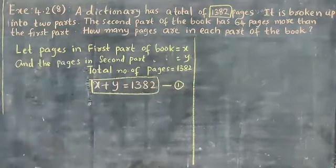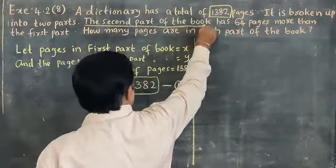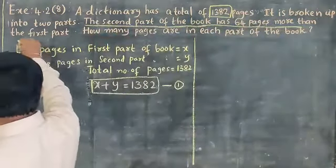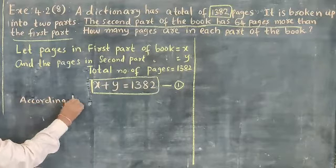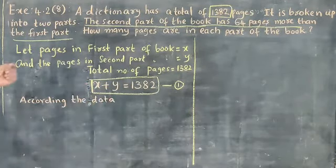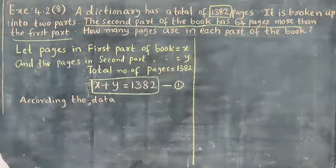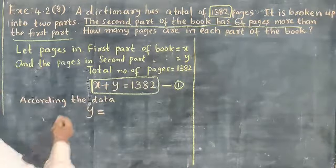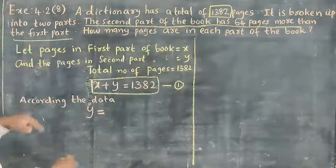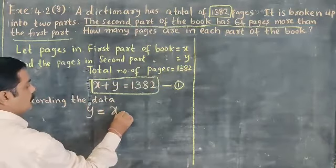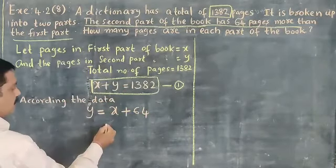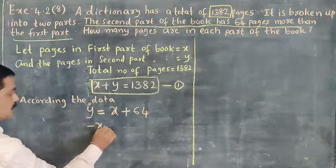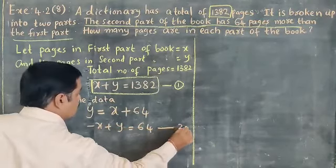This will be treated as the first equation. Next, I will give you one more clue: the second part of the book has 64 pages more than the first part. According to the data, second part means y, so y is equal to x plus 64. Shifting x to the left side, we get minus x plus y is equal to 64. This is treated as the second equation.